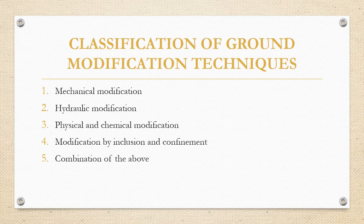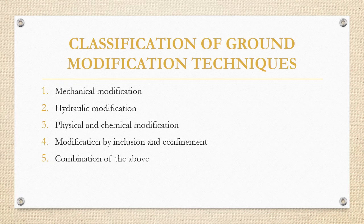Hydraulic modification includes drainage and dewatering, which can be done by means of well point systems, deep well drainage systems, vacuum dewatering, electro osmosis, open sumps and ditches, and eductor wells. Physical and chemical modification refers to ground treatment or ground stabilization using additives or admixtures — either granular or chemical — for improving and stabilizing the ground.